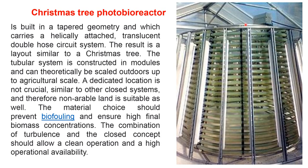The Christmas tree photobioreactor is built in a tapered geometry and carries a helical attached translucent double-hose circuit system, resulting in a layout similar to a Christmas tree. The tubular system is constructed in modules and can theoretically be scaled outdoor up to agricultural scale. The dedicated location is not crucial — similar to other closed systems — therefore non-arable land is suitable. The material choice should prevent biofouling and ensure high final biomass concentration. The combination of turbulence and a closed concept should allow clean operation and high operational availability.